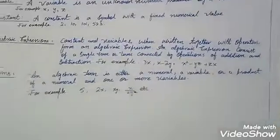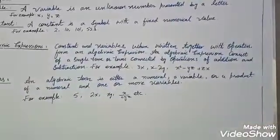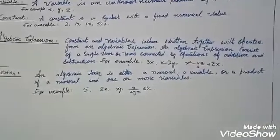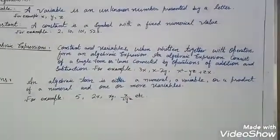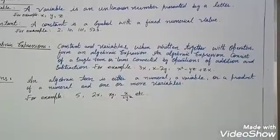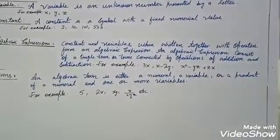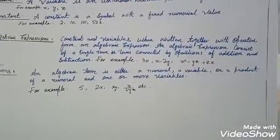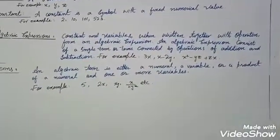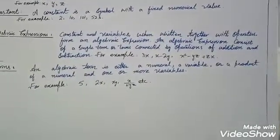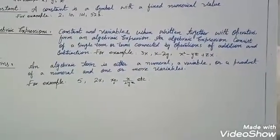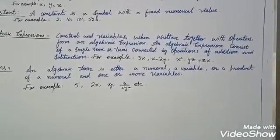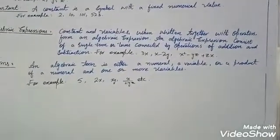The second example is x minus 2y. You can see that x is the first term, minus is the operation, and 2y is the second term. Similarly, the third example is x squared minus yz plus zx. You can see that there are three terms in this example: the first term is x squared, the second term is yz, and the third term is zx.